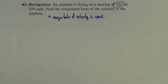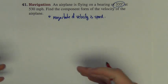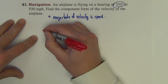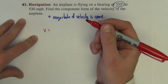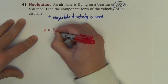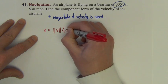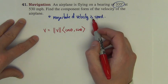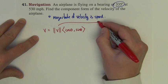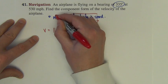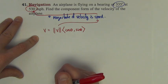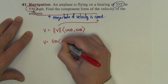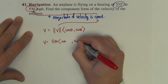So if I'm trying to find the component form of the velocity of this airplane as a vector, I'm going to start with this formula first. The vector, we'll just label it v, the formula is the magnitude of the vector times cosine theta, sine theta. We have to know that the magnitude is just speed, which in this problem is 530. So we've got the vector is 530 times cosine theta, sine theta.